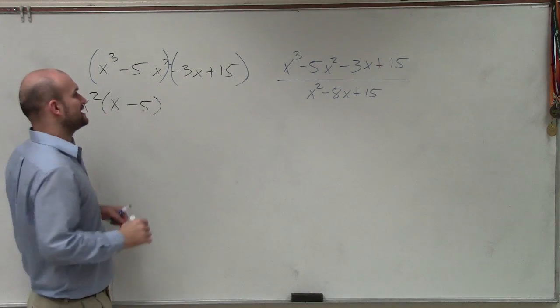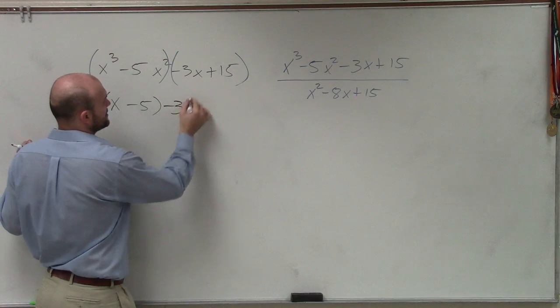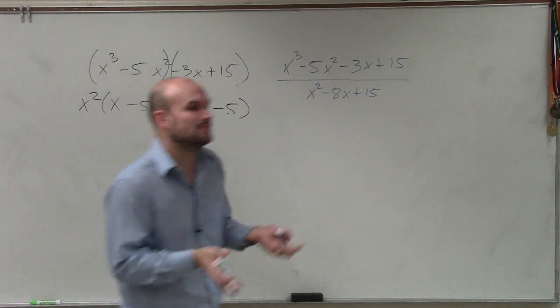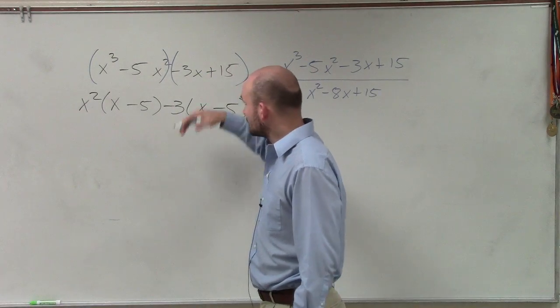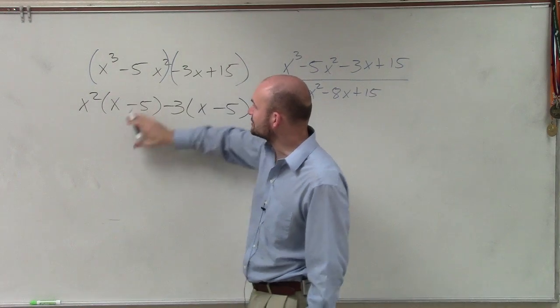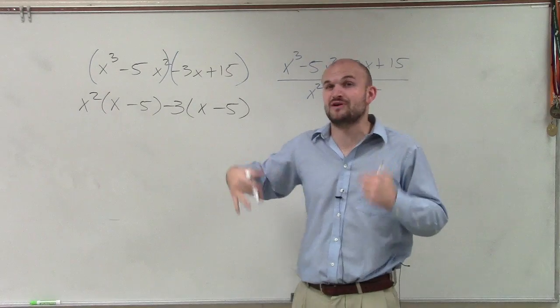For negative 3x plus 15, what I want to do is factor out another common term, so I can factor out a negative 3. And I'm left with an x minus 5. And the important thing when factoring by grouping is that you want to make sure you factor out enough factors, so therefore you have your common factors that you can factor out again.